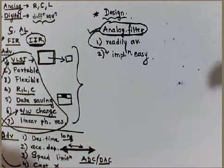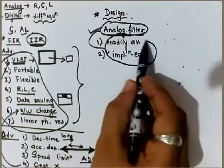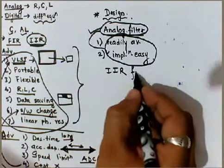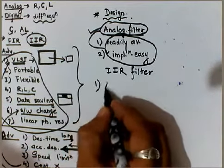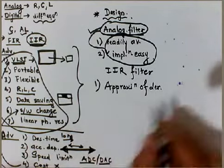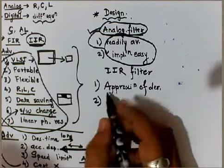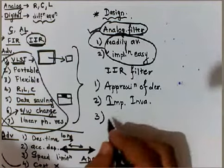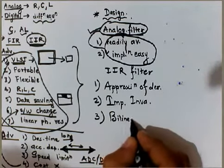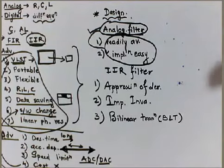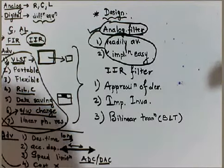Based on these two aspects, there are a few methods by which one can design the IIR filter. The first method is approximation of derivatives. The second method is impulse invariance. The third method is bilinear transformation, also called the BLT method. In the next lecture, we will see how to proceed with these different methods to design IIR filters. Thank you everyone.